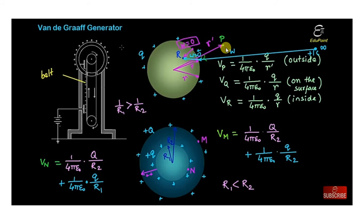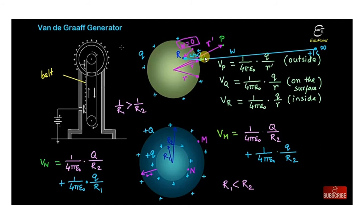Suppose a charge +Q is uniformly distributed on the sphere. At point Q on the surface of the sphere, the distance equals the radius R, so the potential is V = (1/4πε₀) × (Q/R). For a point R situated inside the sphere, since the field inside is zero, the work required to come inside is zero.